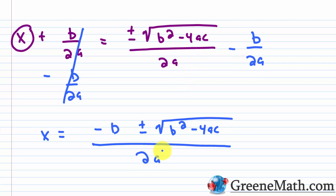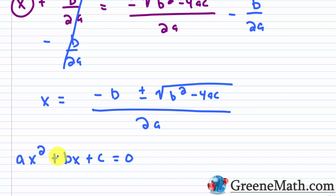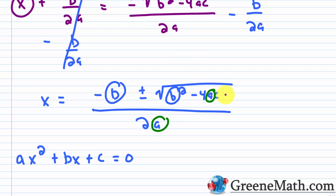This is the quadratic formula, which we can use to solve any quadratic equation. If the equation is in the format of ax squared plus bx plus c equals zero, we just record the values for a, b, and c and plug them in — b here and here, a here and here, and c here. That's all we have to do.